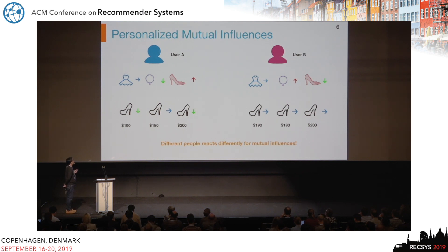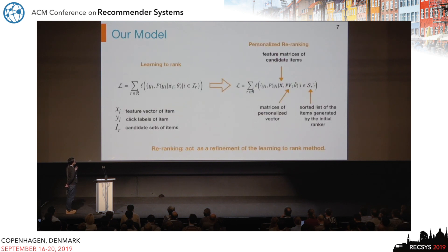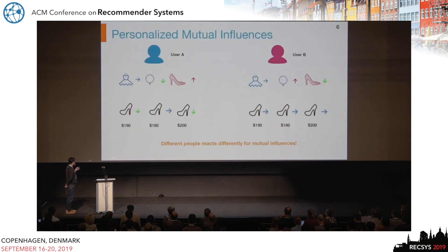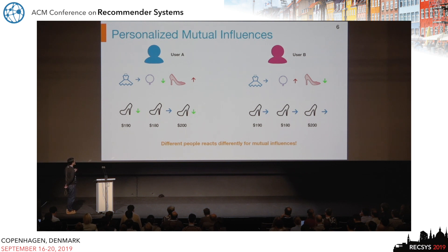Besides mutual influences between items, the user also plays an important role in recommendation. For example, if we recommend dresses for both user A and user B, for user A shoes may act as a supplement, but for user B a belt is the supplement to the dress. So if we recommend the belt and place it alongside the dress, the click-through rate will drop for user A.